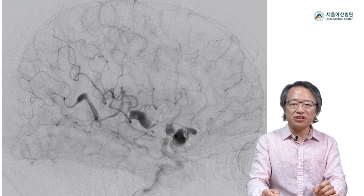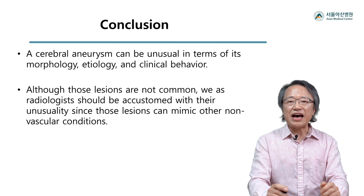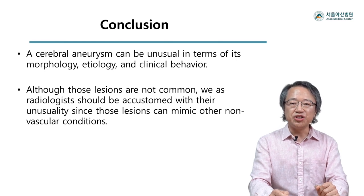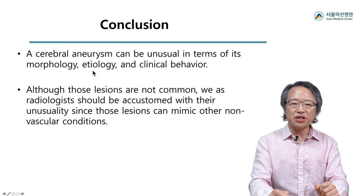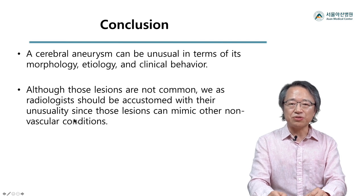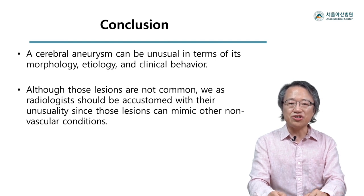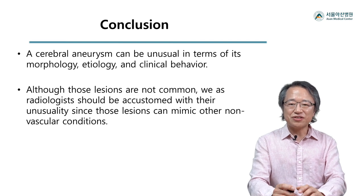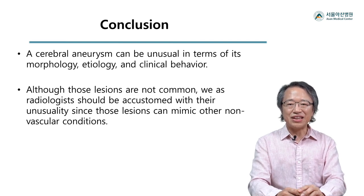This histologically benign but clinically relentless condition should be at the top of the unusual aneurysm list. I have presented several impressive and unusual aneurysms, and of course there are more lesions that need to be mentioned since a cerebral aneurysm can be unusual in terms of morphology, etiology, and clinical behavior in various ways. Although those lesions are not common, we as radiologists should be accustomed to their unusuality since they can mimic other non-vascular conditions on imaging. Thank you.